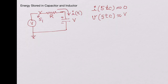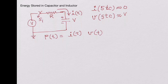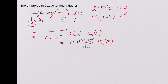Now let's see what the power is. The power P(t) can be written as I(t) multiplied by V(t). We know that I(t) equals C · dVc(t)/dt, and V(t) is Vc(t). So P(t) = C · Vc(t) · dVc(t)/dt.